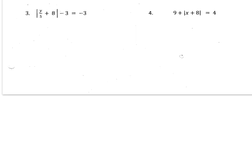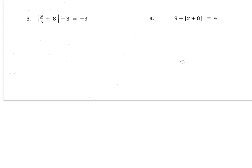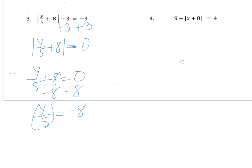So let's look at number 3. The absolute value of y over 5 plus 8 minus 3 equals negative 3. Give this one a try. So if I add 3, because I have to isolate my variables first, the absolute value of y over 5 plus 8 equals 0. There's no such thing as negative 0, so I don't have to write a second equation. y over 5 plus 8 equals 0, minus 8 from both sides. y divided by 5 equals negative 8, times by 5, and y is negative 40.